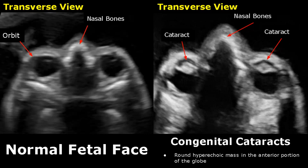Congenital cataracts can be diagnosed on ultrasound — we will see a round hyperechoic mass in the anterior portion of the globe. In the normal image, you can see the normal lens as a small dot in the anterior part of the globe, but cataracts appear as large hyperechoic masses.